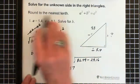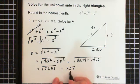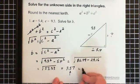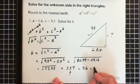Now the question says round to the nearest tenth. So the nearest tenth is here. So then the answer is 7.6. And 7.6 is B.